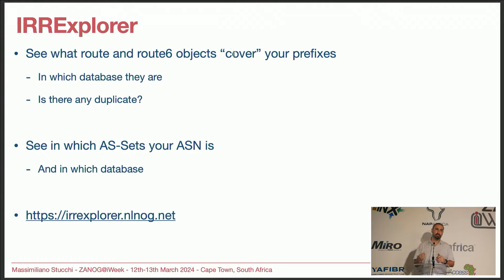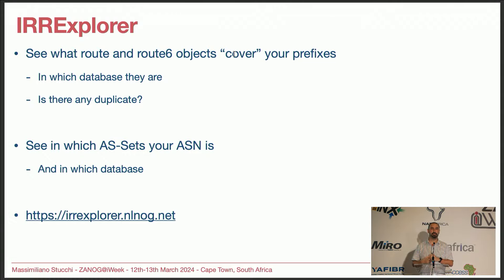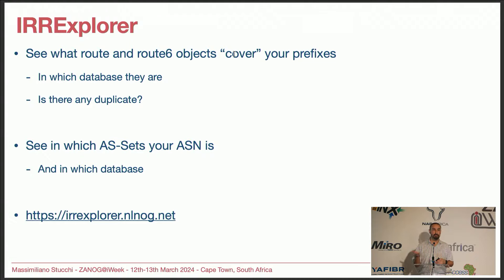Before we go deep into BGP, I would take a step back. How are your Route and Route6 objects? For that there is IRR Explorer. How many of you have heard about IRR Explorer before? That's way less than people who have used looking glasses. IRR Explorer gives you insight into how your AS number or prefix looks in the IRR — not only in your regional registry's IRR, but anywhere in the world. You can also see which AS sets your ASN is included in.